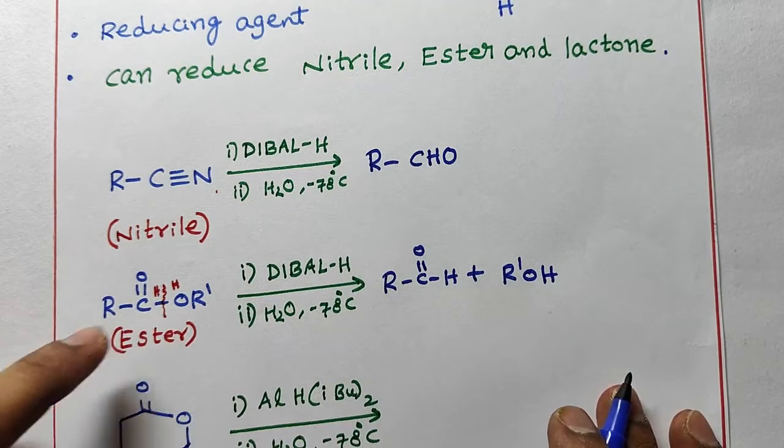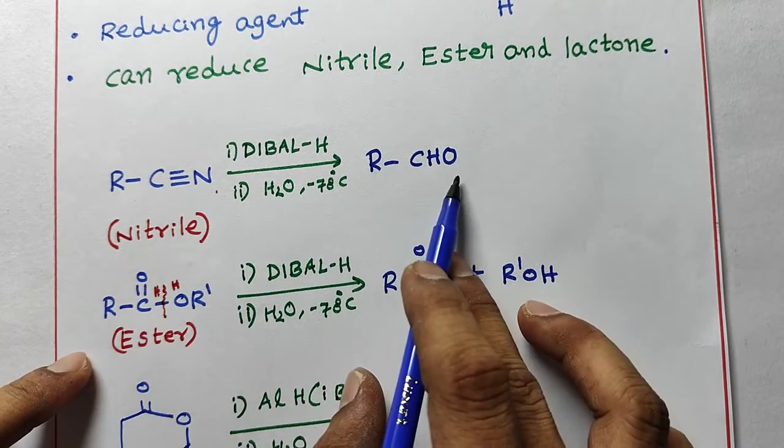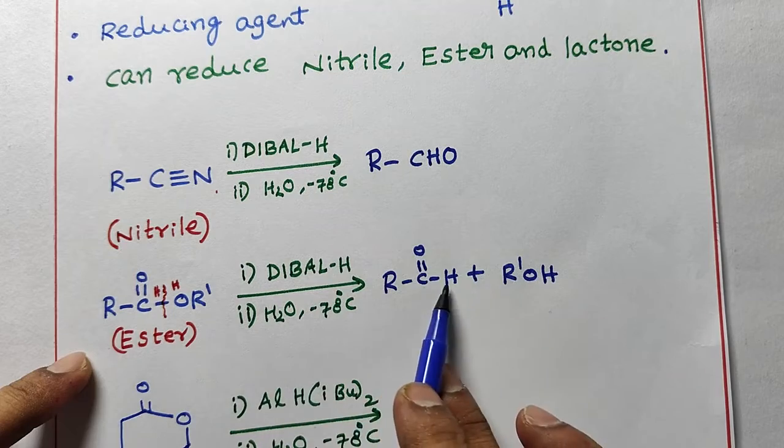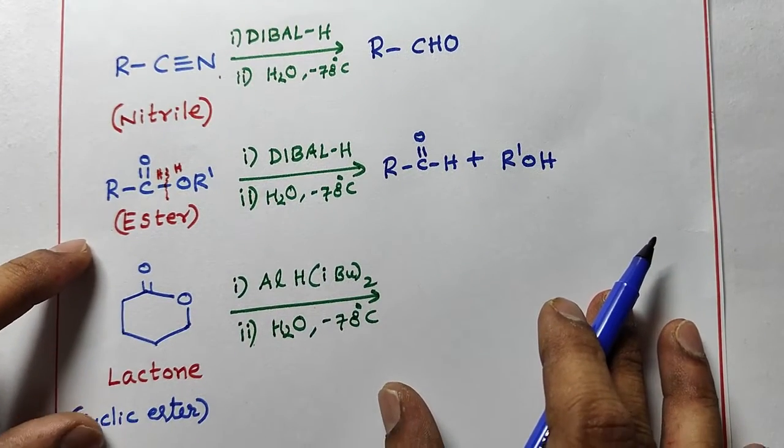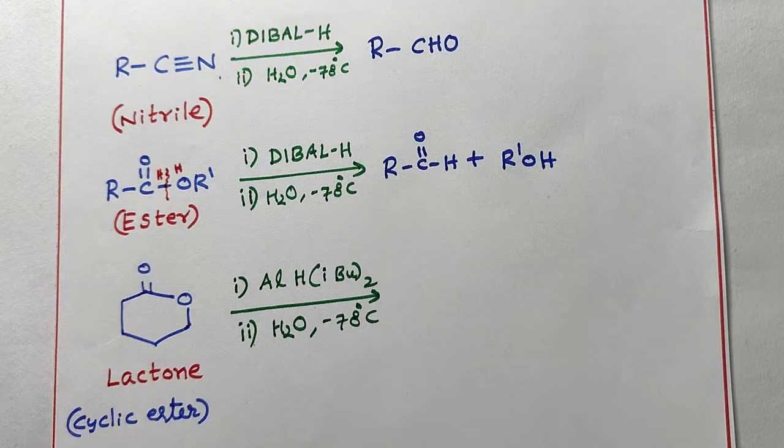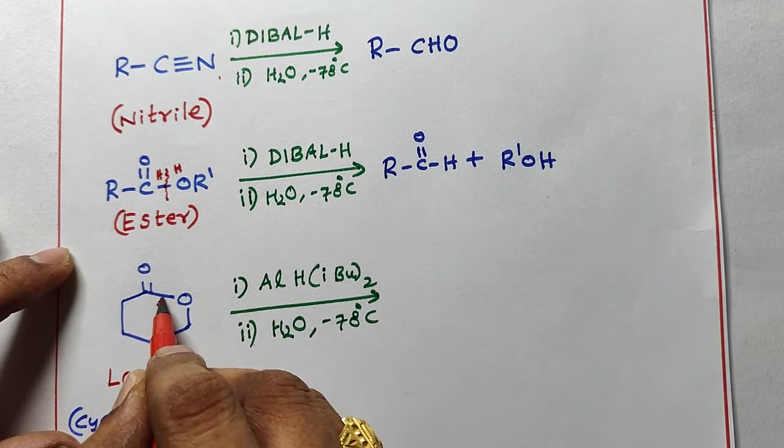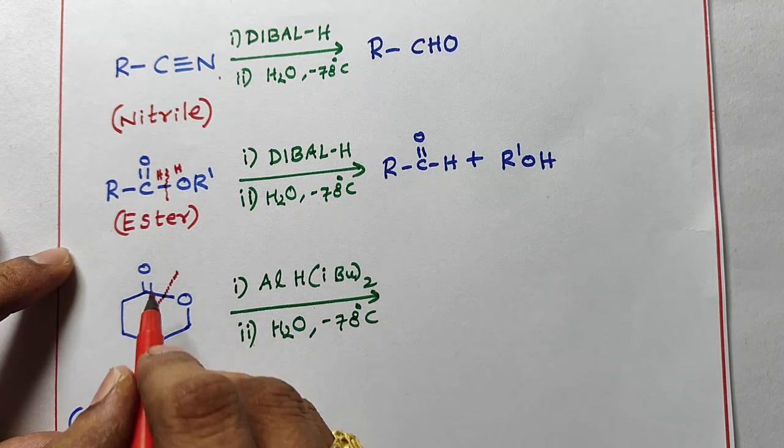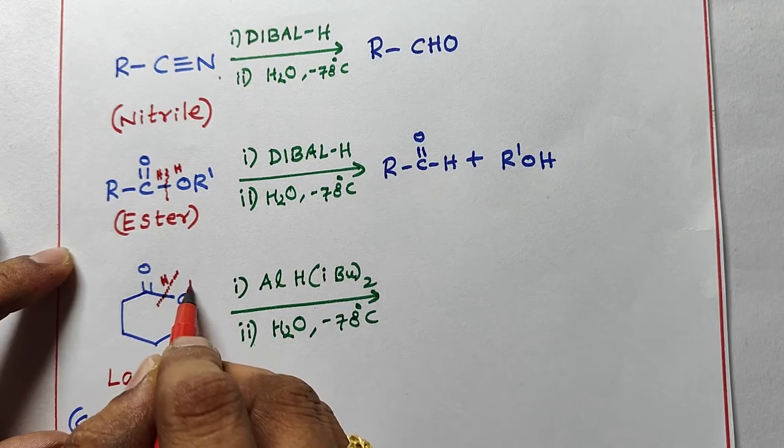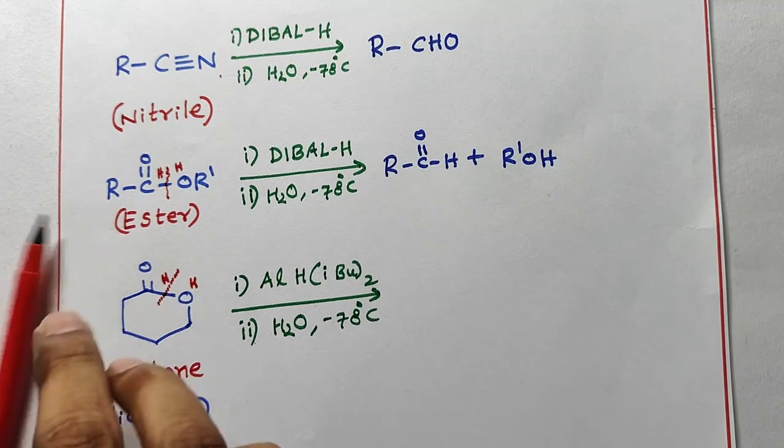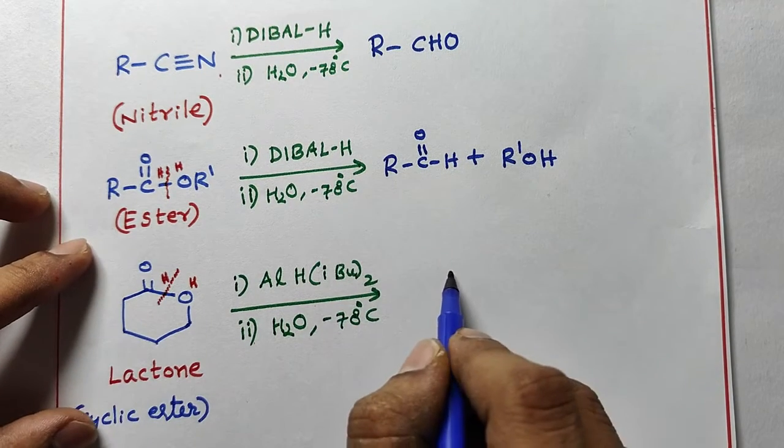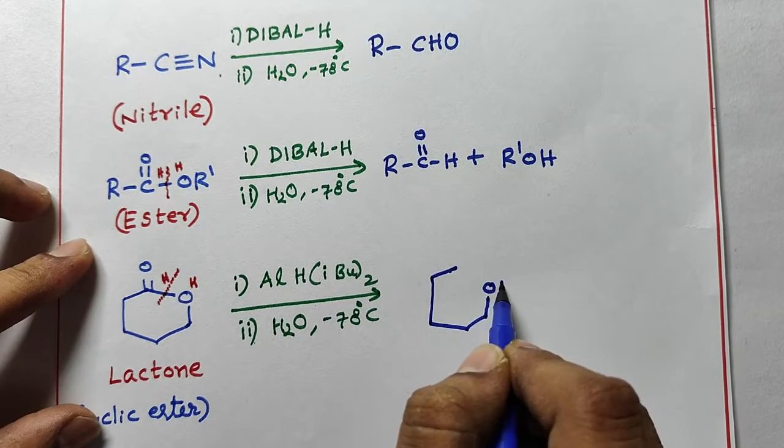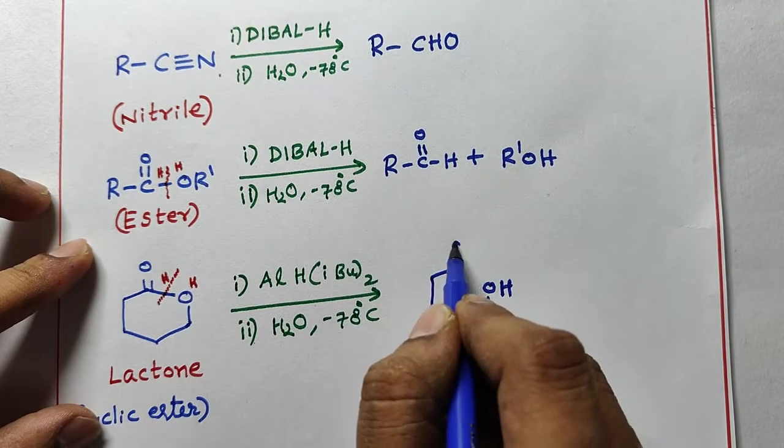And cyclic ester, if you take lactone, same way between C double bond O and oxygen you can break the bond, and here one hydrogen, here one hydrogen you can write it. Then how do you write the product? C here, here OH, here C double bond O H aldehyde group and OH group.